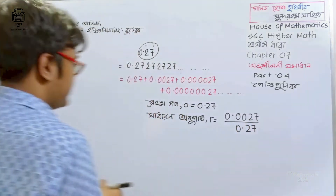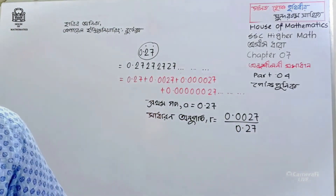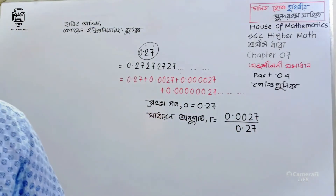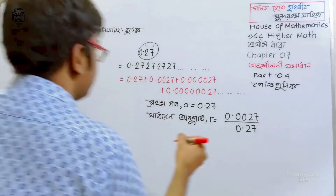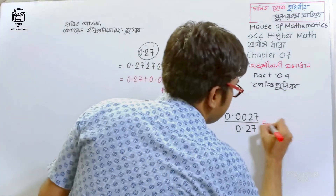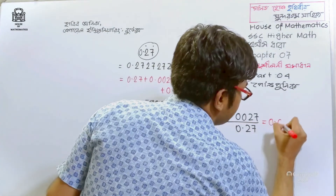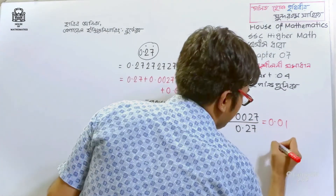All right. Here we can calculate our total — total is 0.0001.